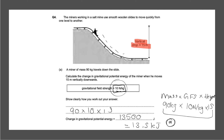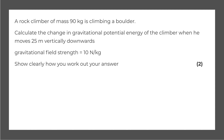Next question: a rock climber of mass 90 kilograms is climbing a boulder. Calculate the change in gravitational potential energy of the climber when he moves 25 meters vertically downwards. The gravitational field strength is 10 newtons per kg. This is again two marks. The equation is mass multiplied by the gravitational field strength multiplied by the height.